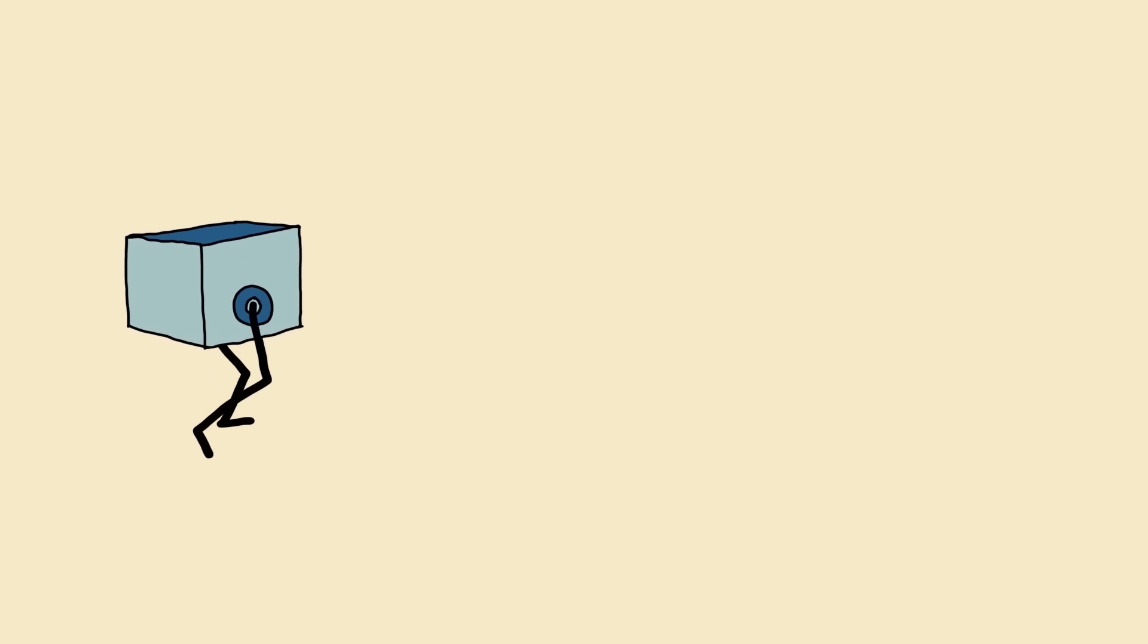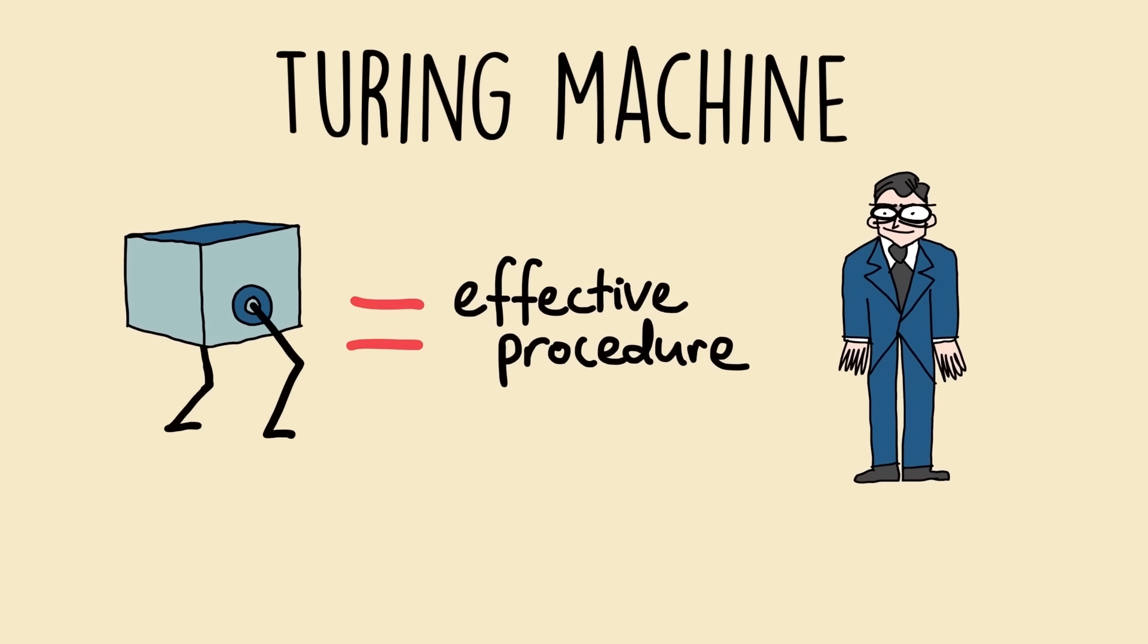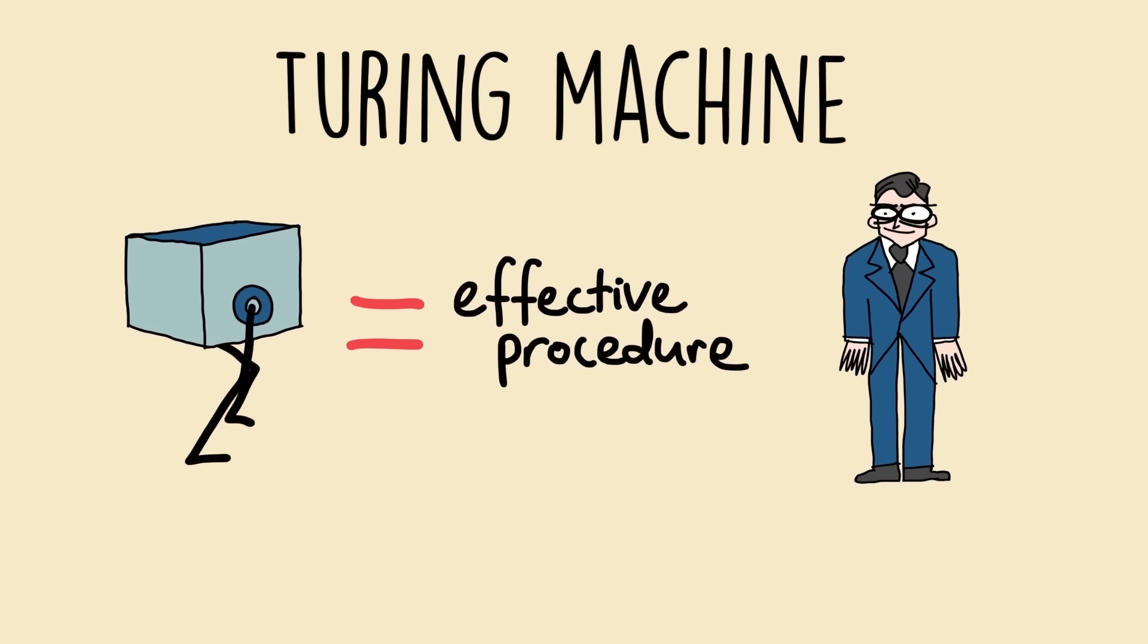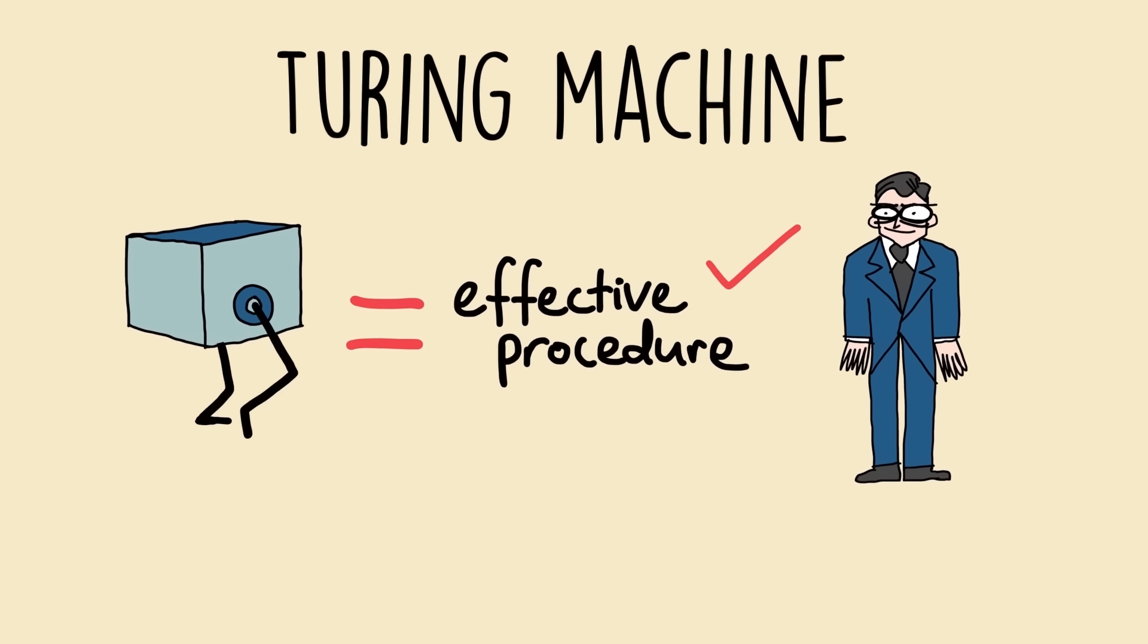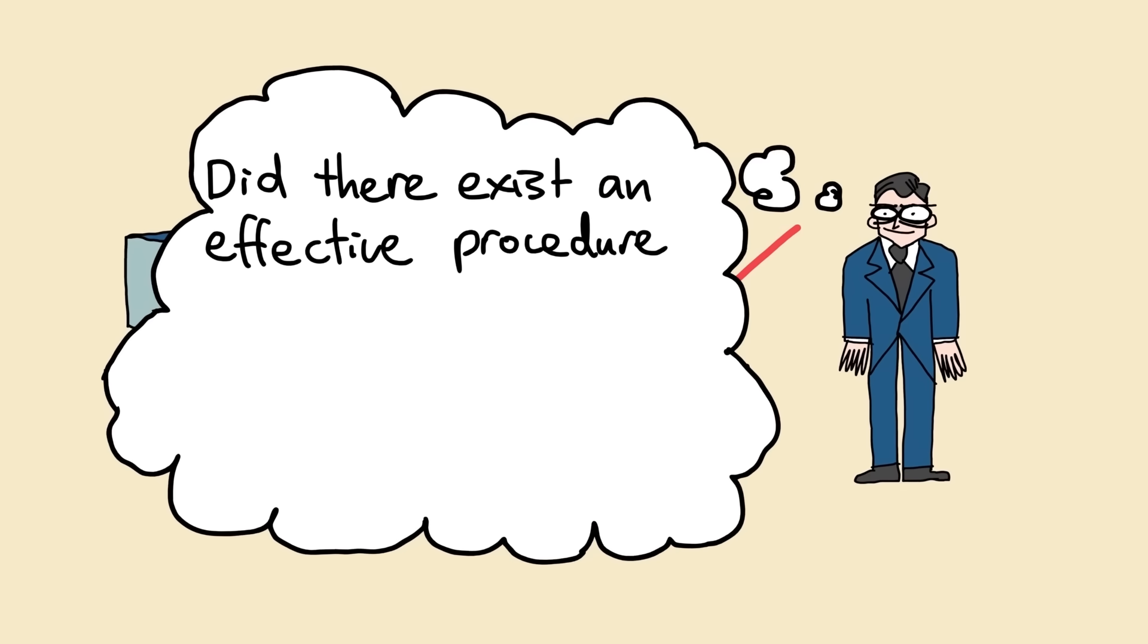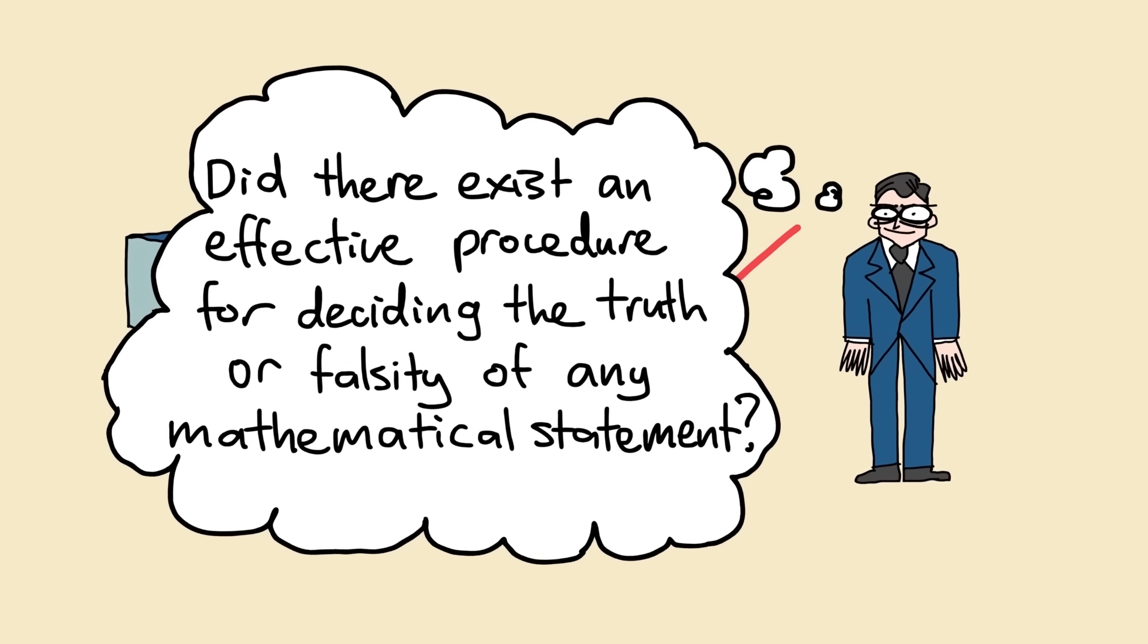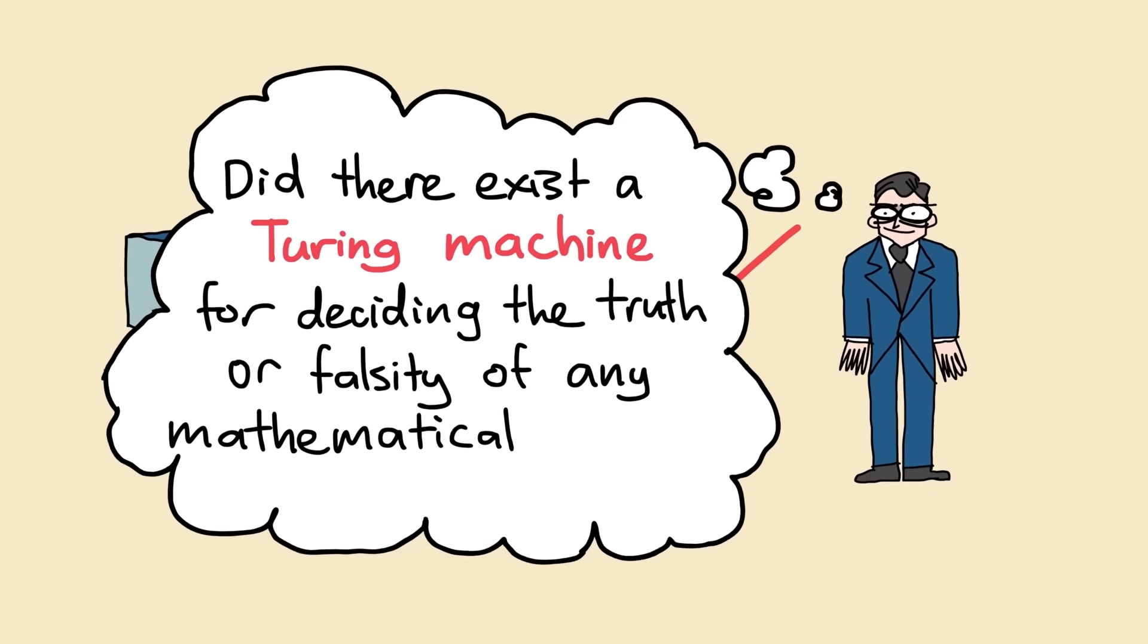This abstract machine, now called a Turing machine, was Turing's definition of an effective procedure. An effective procedure was anything that could be computed by a Turing machine in a finite amount of time. So with that out of the way, he could go on to answer Hilbert's question. Did there exist an effective procedure for deciding the truth or falsity of any mathematical statement? Or, as framed by Turing, did there exist a Turing machine for deciding the truth or falsity of any mathematical statement?